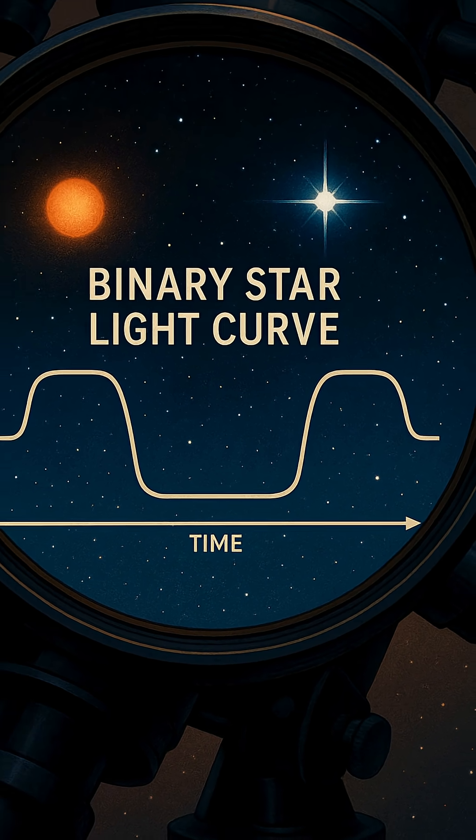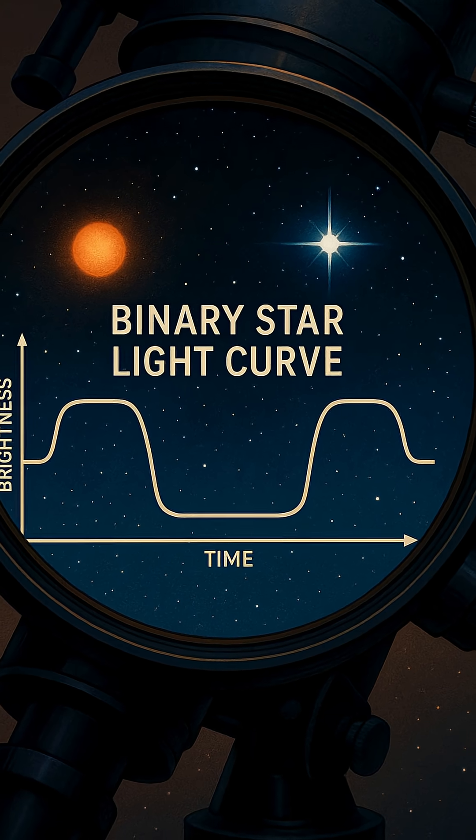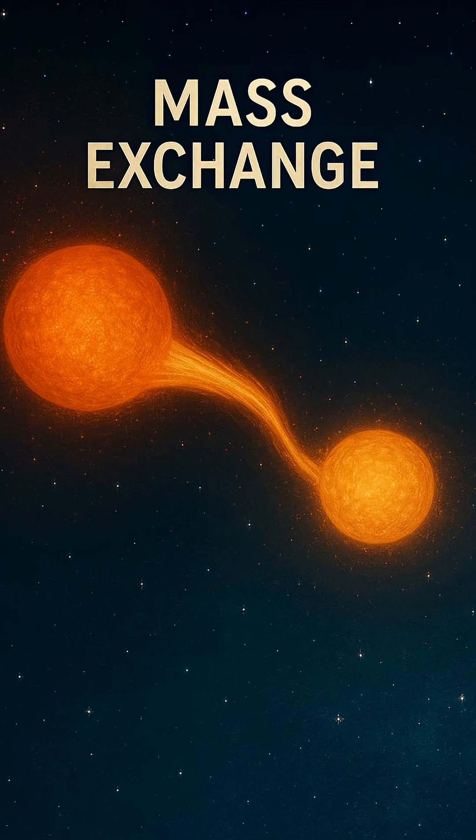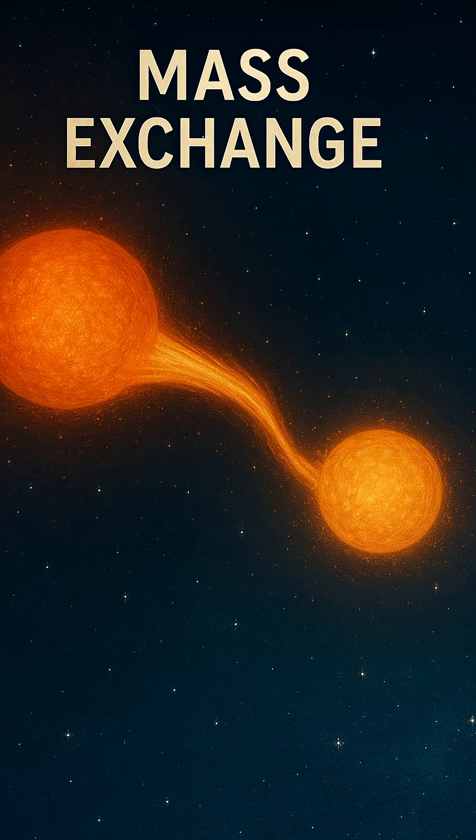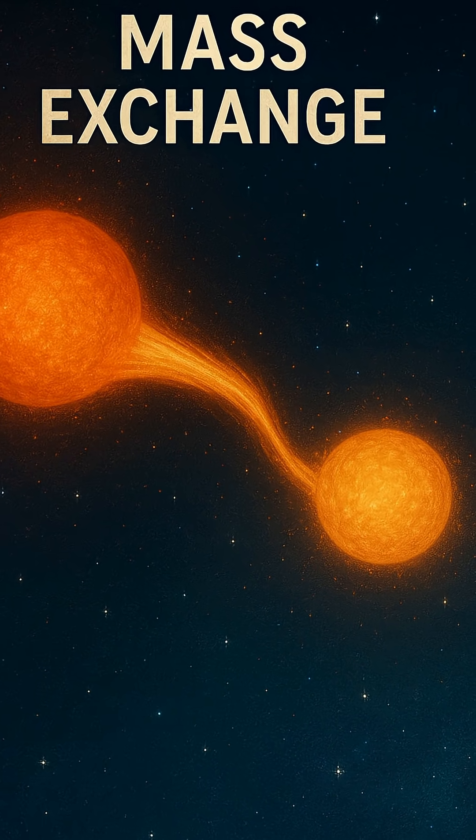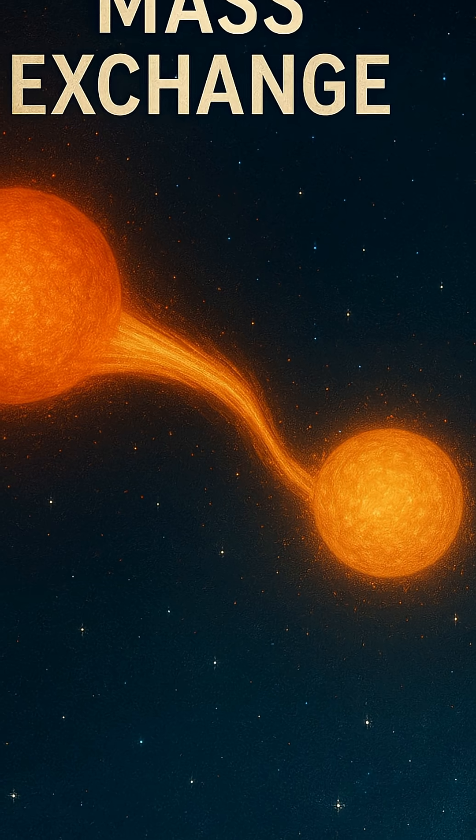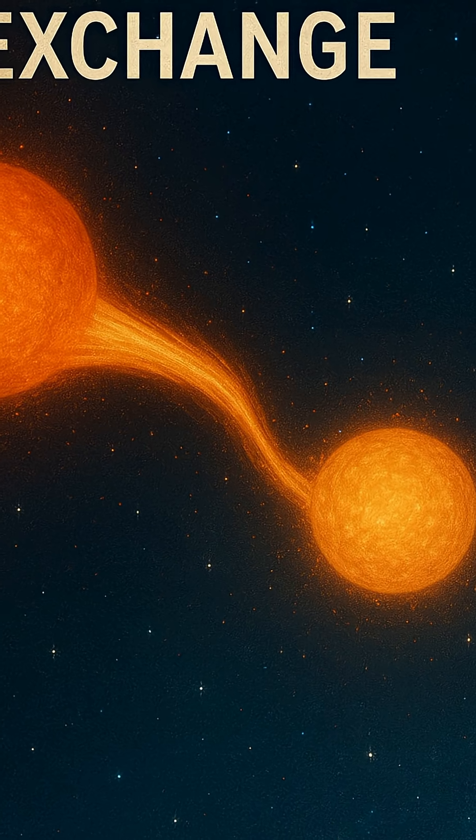But too much mass, too fast, and disaster looms. A white dwarf, what remains of a once-normal star, can grow unstable if it accumulates more mass than it can handle. It may ignite in a sudden thermonuclear explosion, a Type Ia supernova, so bright it can outshine an entire galaxy for a time.